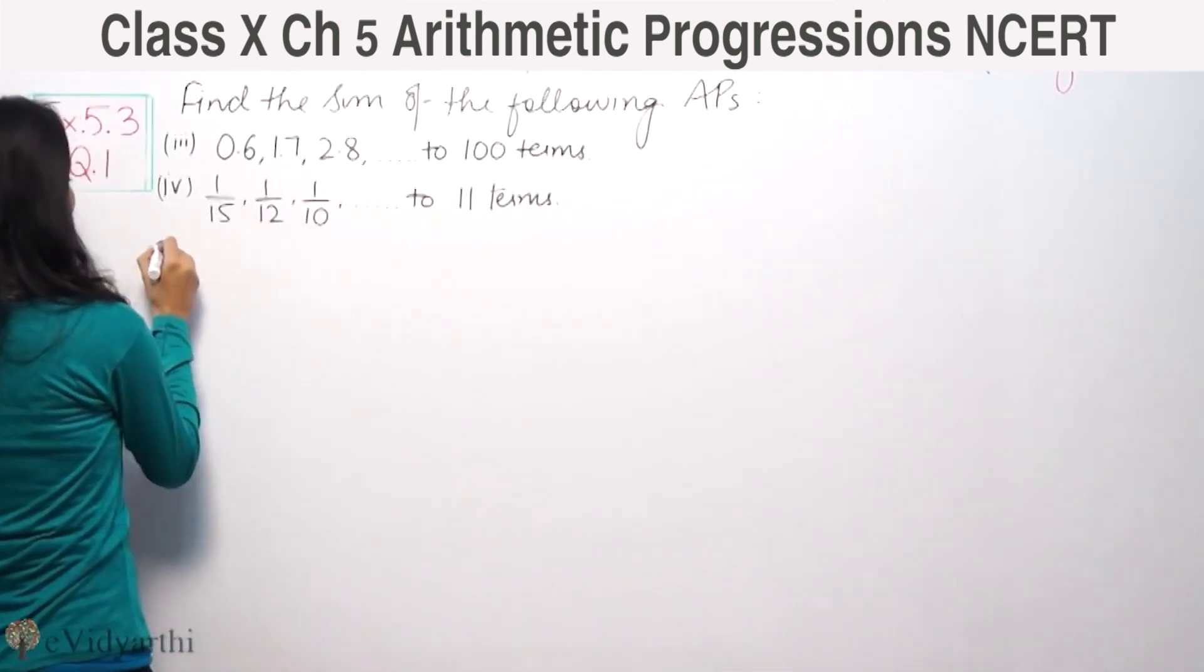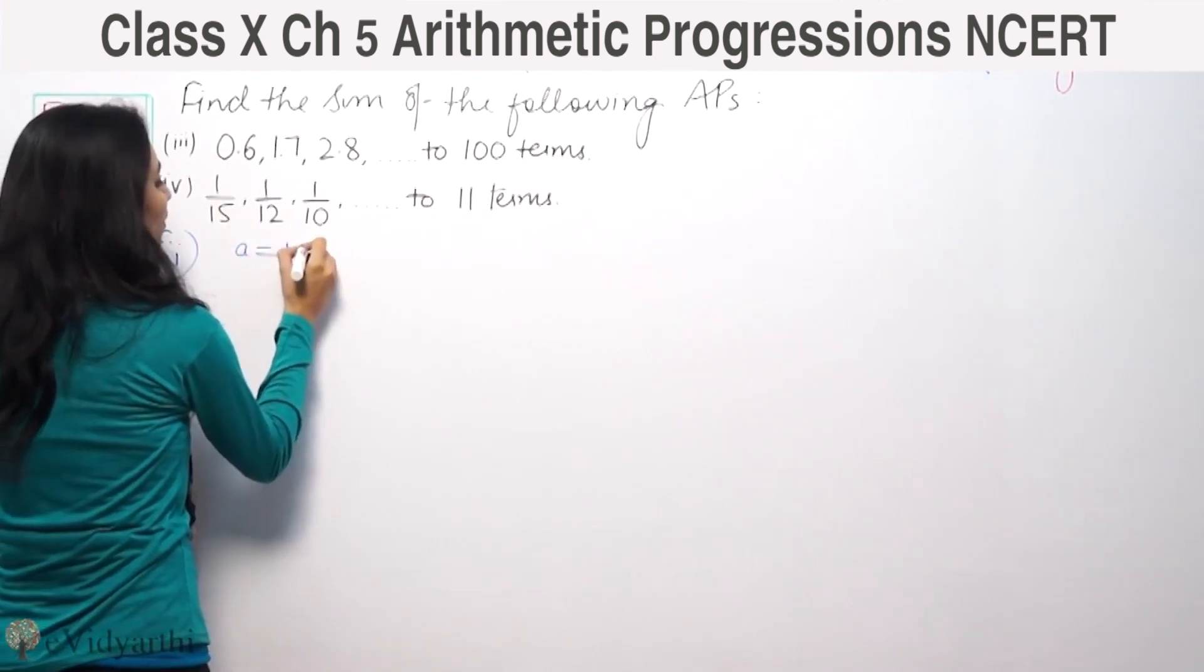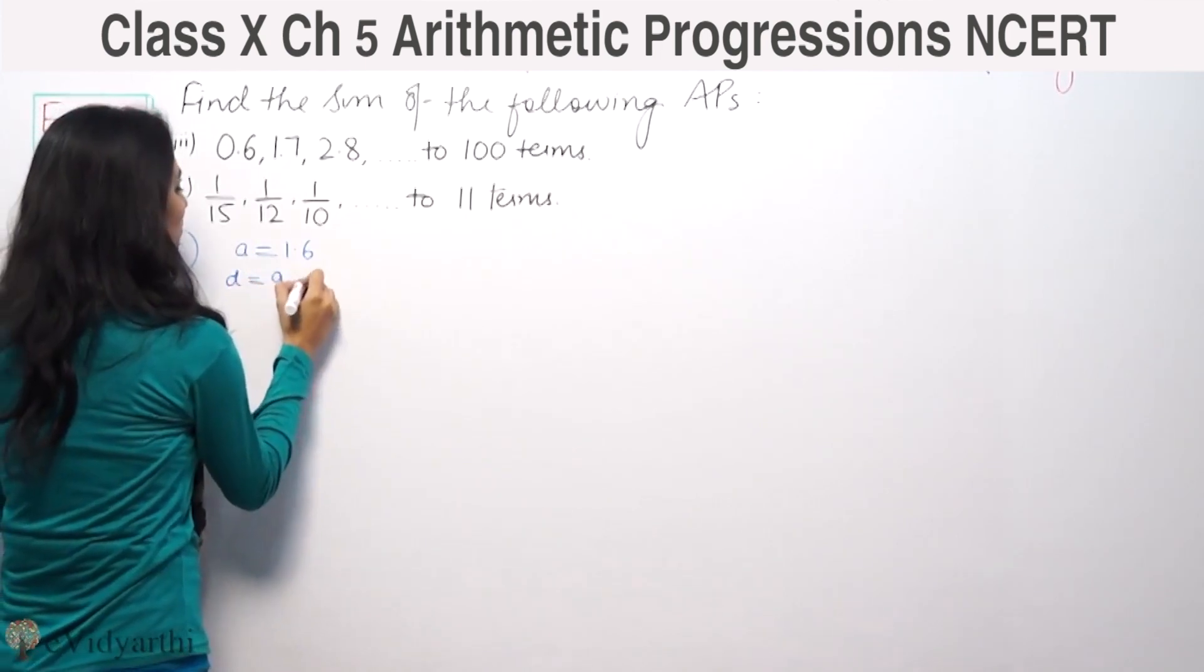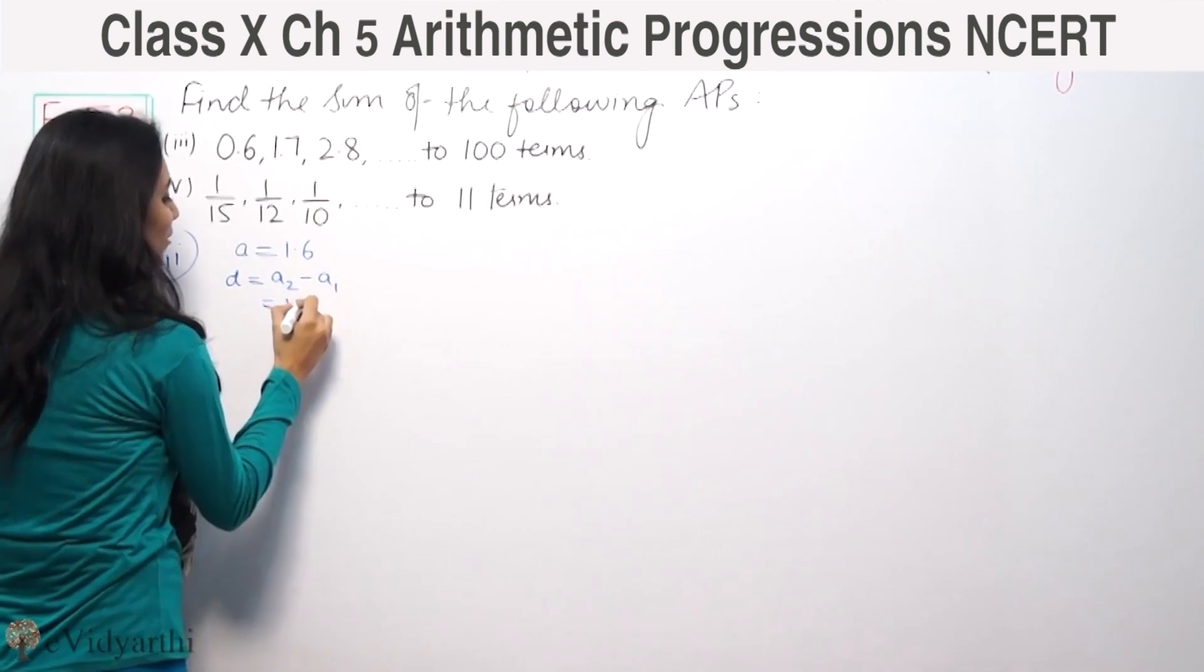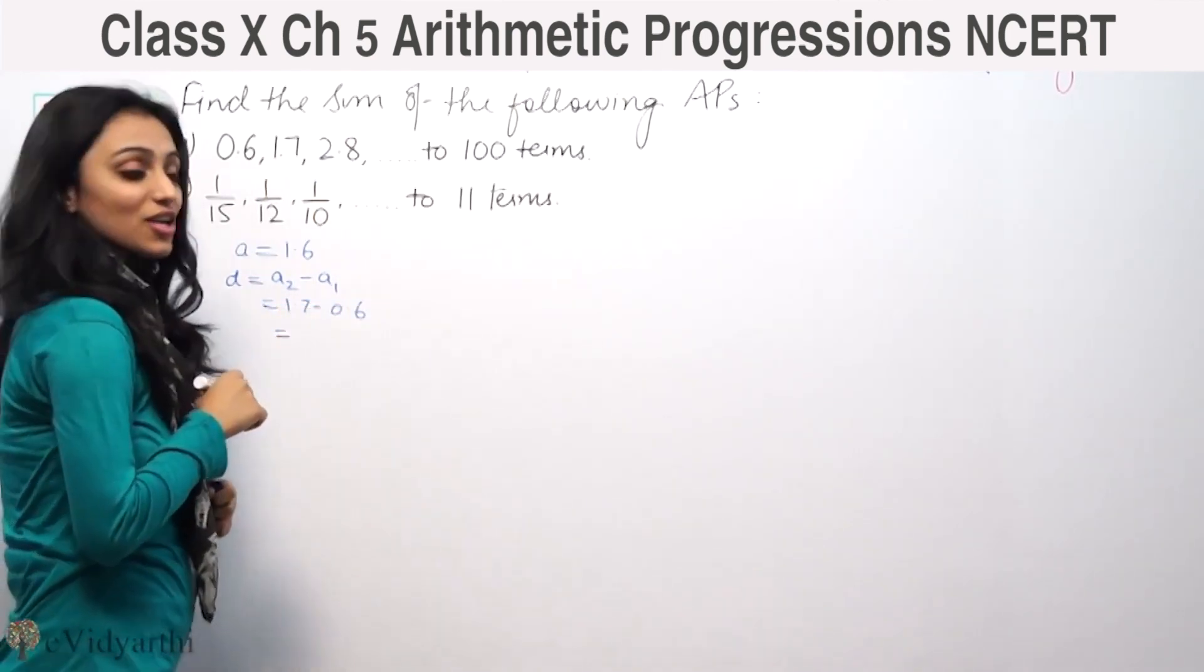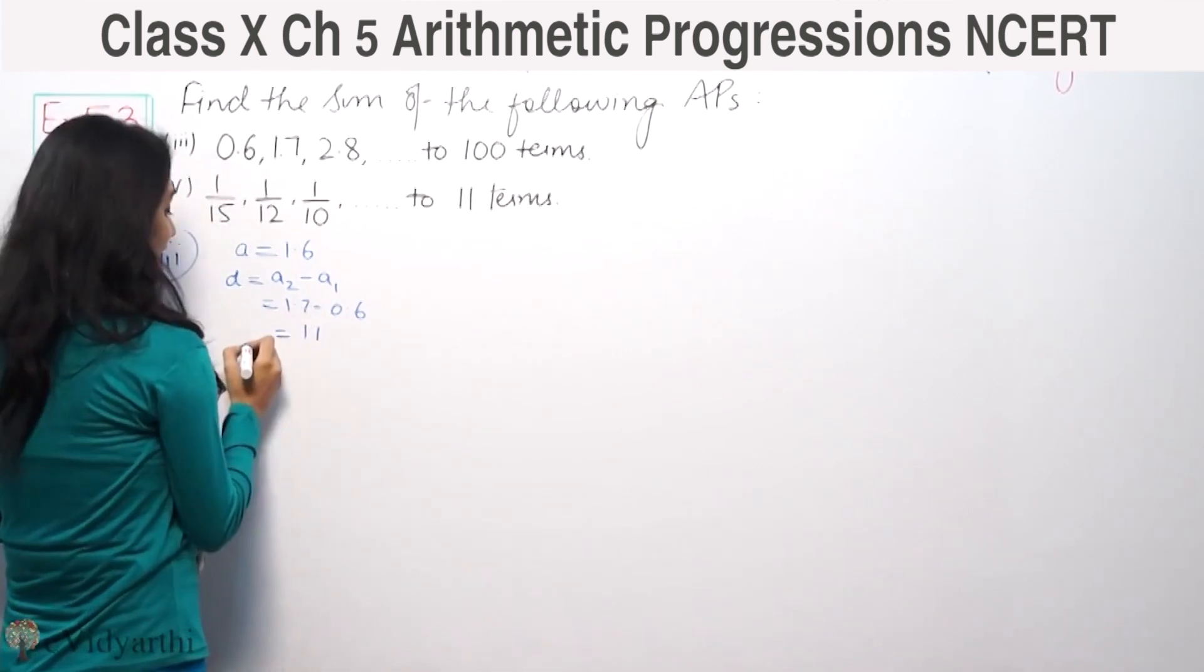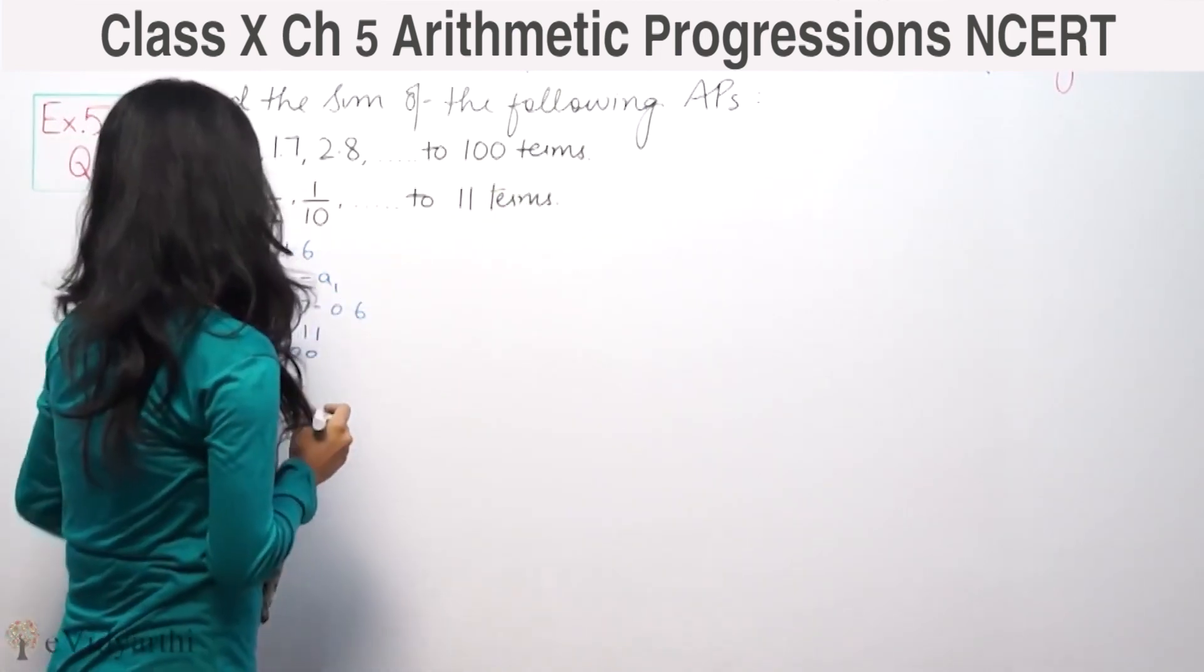Part number 3. First term is 0.6. Common difference, we have A2 minus A1, that's 1.7 minus 0.6, so we get 1.1. N terms, that means 100. We have 100 terms, so N is 100.